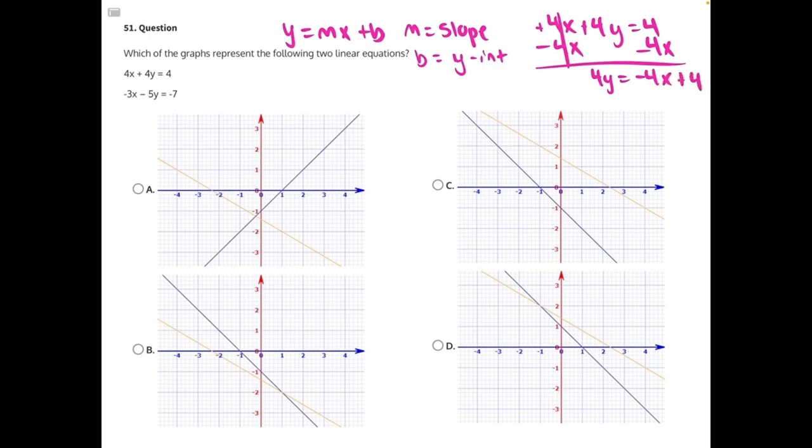Then opposite operations: 4 times y, 4 divided from both sides. These will cancel, and we will be left over with y equals negative 4 divided by 4, which just gives us a negative 1. And then 4 divided by 4 again would give us a positive 1. So we have y equals negative x plus 1.